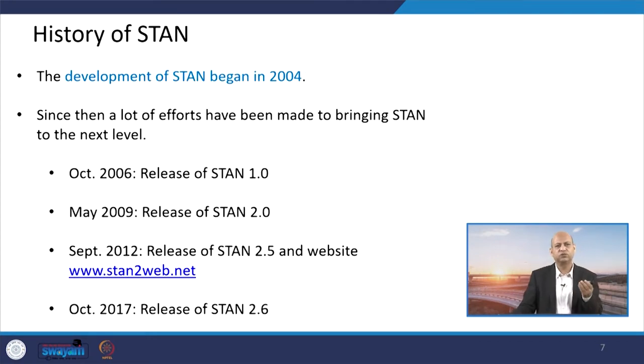If we go for the history of STAN, then it is improving year by year. In 2006, it was released, the STAN first version. In May 2009, the STAN 2.0 version was released. In September 2012, version 2.5 was there and the website is STAN2web.net. In October 2017, STAN 2.6, the further evolution was there. Otherwise, it started from 2004, so you know last 12 to 13 years, lots of improvements have been there.